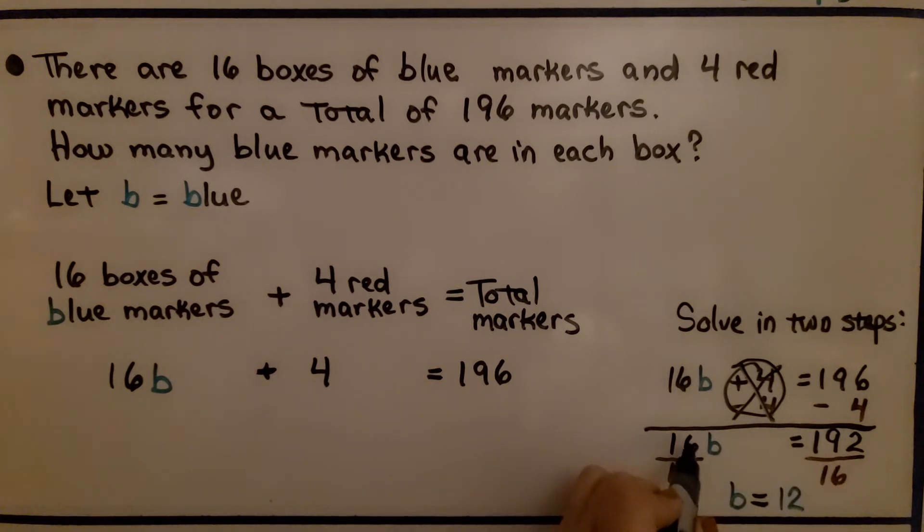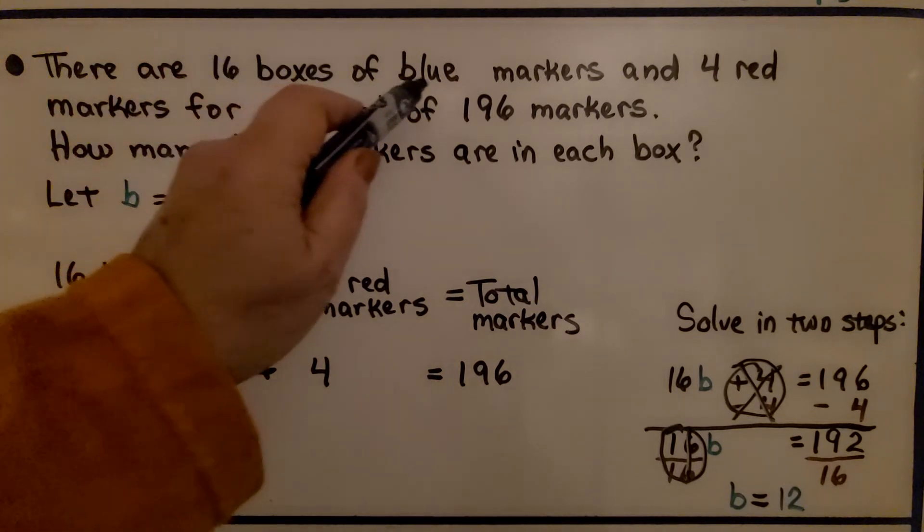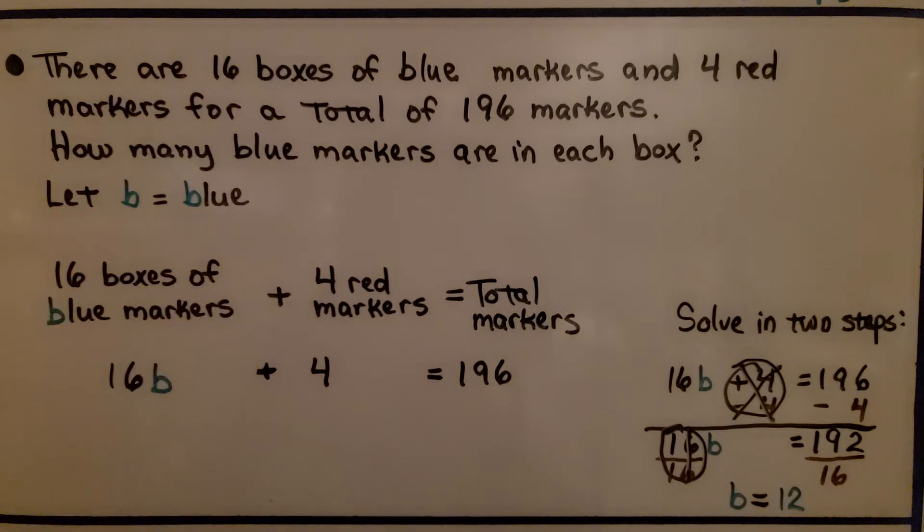Now we have 16b equals 192. We divide both sides by this coefficient 16, which is going to make this have the same numerator and denominator. So it equals 1. We have 1b. On this side we have 192 divided by 16. We can do a little long division on the side. And we get that b equals 12. We know that each box of blue markers holds 12.